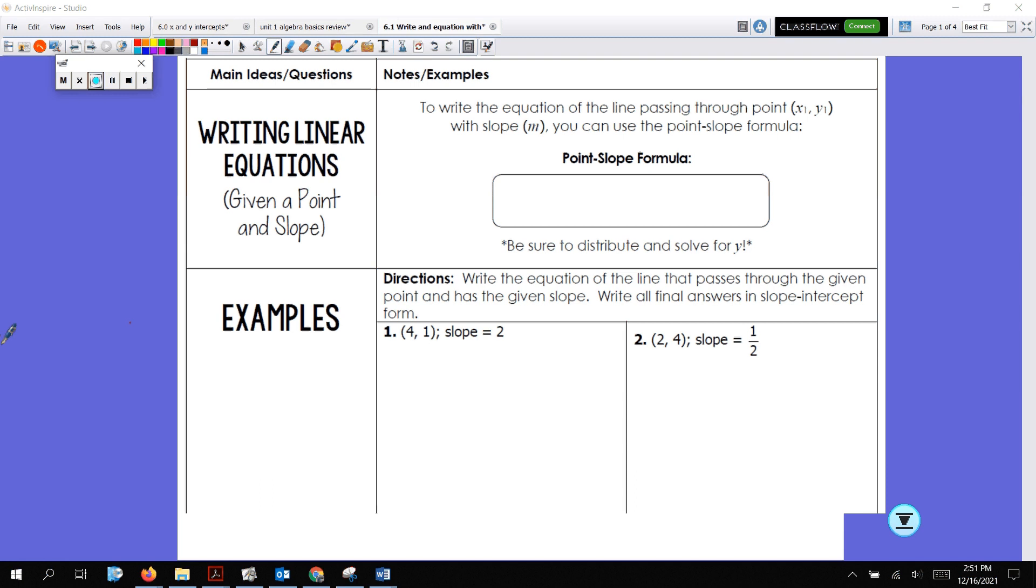All right, today we are going to be writing linear equations. Remember, we're going to keep them in slope-intercept form. So when we write the linear equations, we're going to end up looking like y equals mx plus b when we're done. Okay, so the first thing we're going to learn about is point-slope formula. Okay, so if you're given a point and you're given a slope, you'll be able to make an equation and solve for y and have yourself an equation of the line.